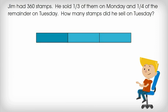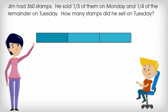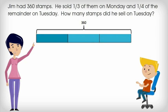So we made our first bar already. We split it into three parts because we knew that Jim sold one third of the total. Since the denominator tells us the total number of parts, we know to split it into three parts. He started with a total of 360 stamps, so we can label the whole 360. The unshaded part, or two thirds, is what Jim has left on Monday, also known as the remainder.